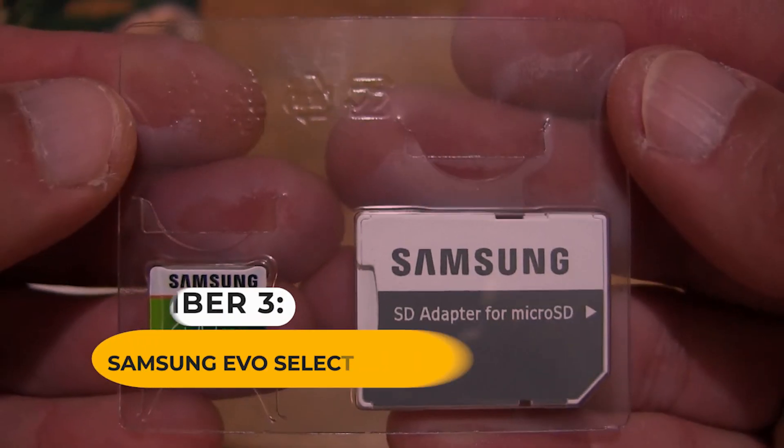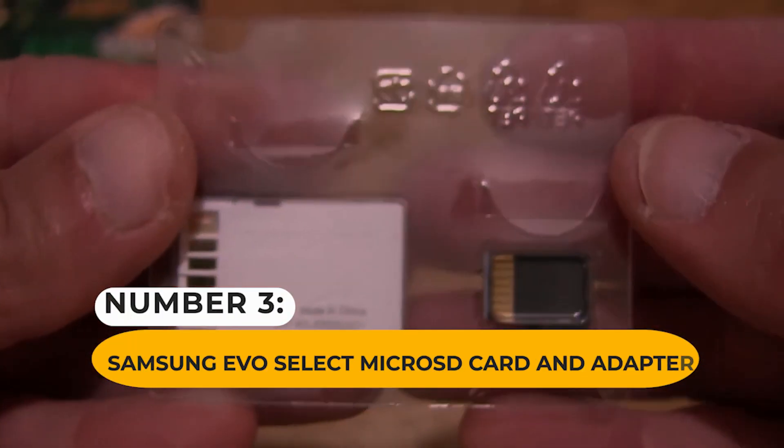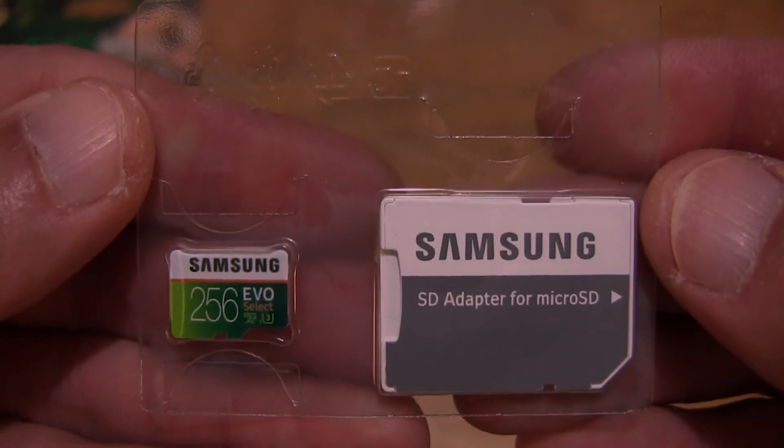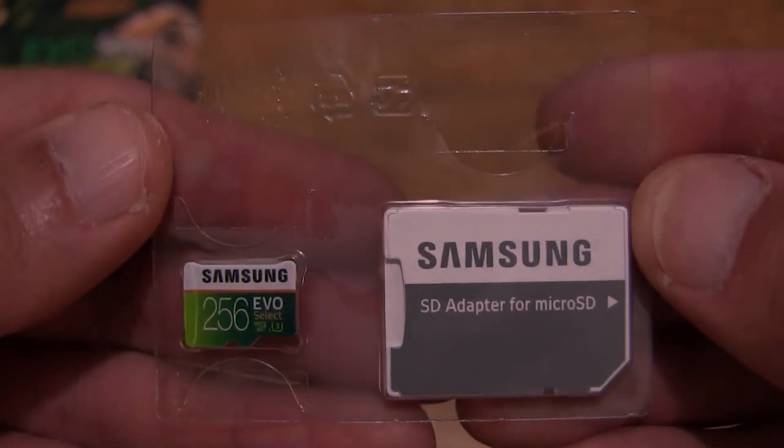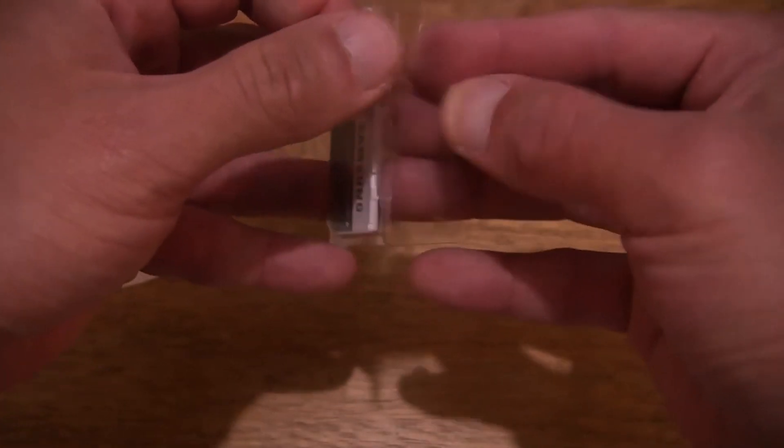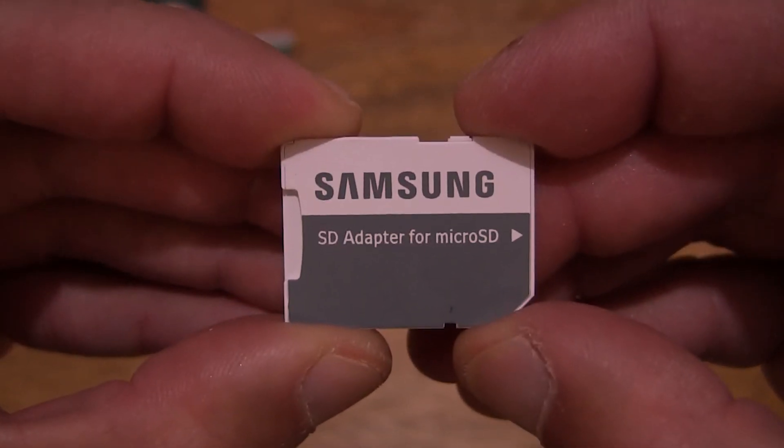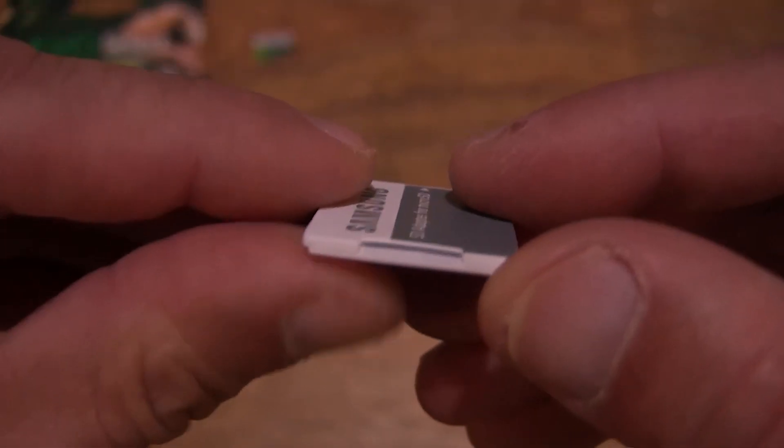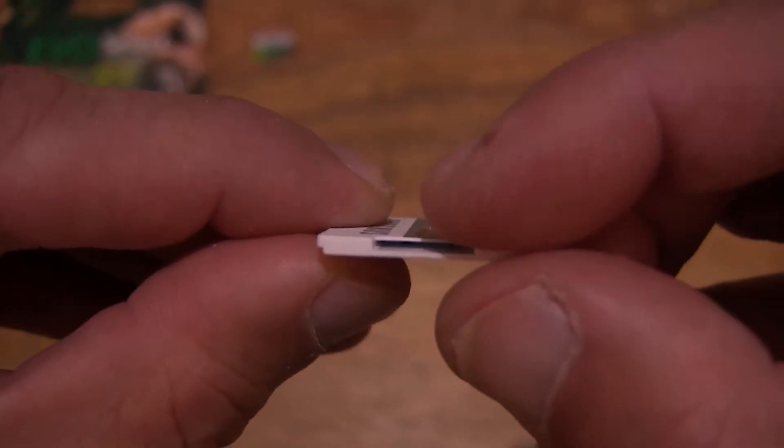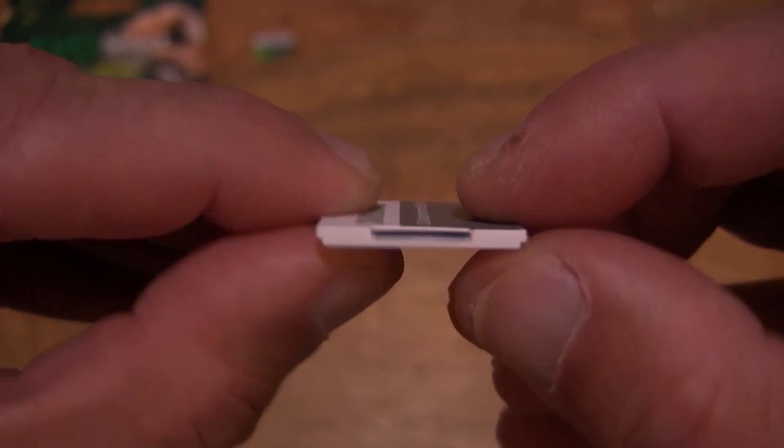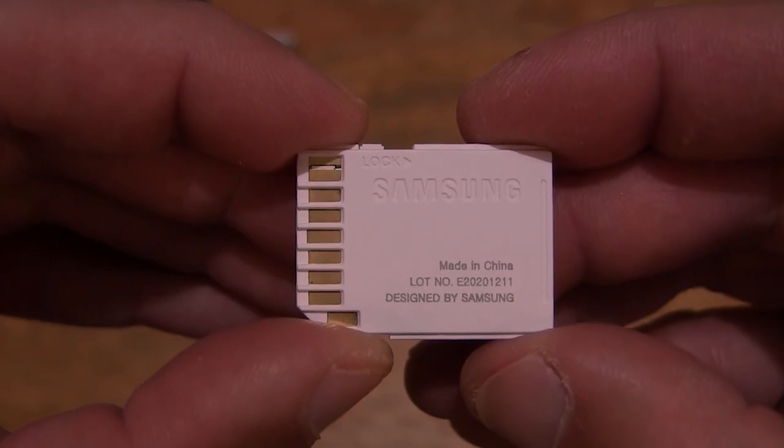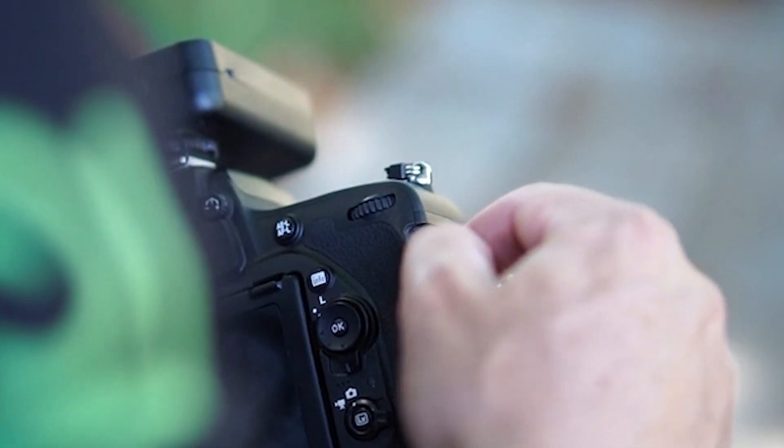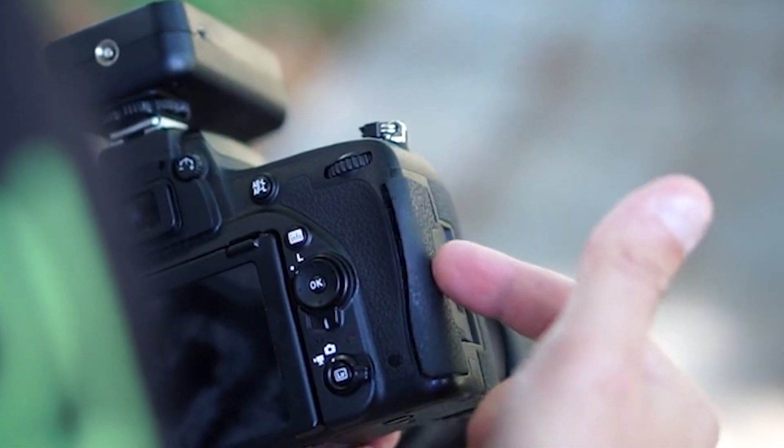Number 3. Samsung Evo Select MicroSD Card and Adapter. It never hurts to have a little more storage, especially if you're constantly on the go. And you can now ditch those cumbersome thumb drives in favor of this incredibly small microSD card from Samsung. With read and write speeds of 95MB per second and 20MB per second, respectively, the Evo Select MicroSD Card provides a lot of storage space and performance for the money. It includes an SD adapter, or you can use it with the Anker Card Reader. If your computer lacks an SD card slot, you can purchase the 32GB Samsung Evo Select MicroSD Card from Amazon for under $30 with an SD adapter.